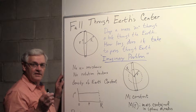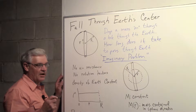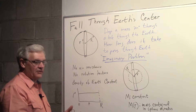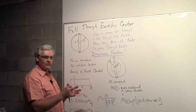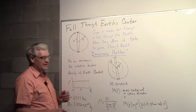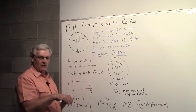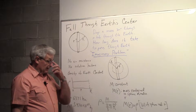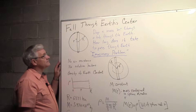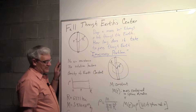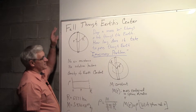We want to look at the interesting problem — it's a totally imaginary problem — of having the Earth with a hole completely through it, like a well going through the center all the way out to the other side, and dropping a mass into that well and calculating how long it takes to fall through the Earth's center to the other side. We're calling this 'Fall Through Earth's Center.'